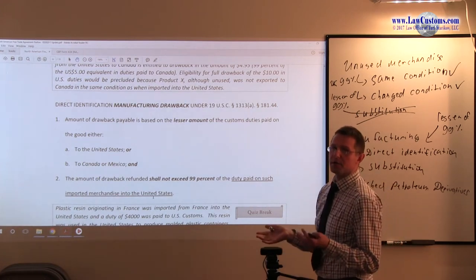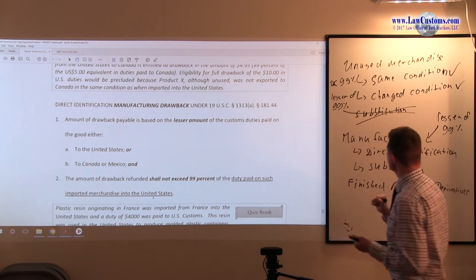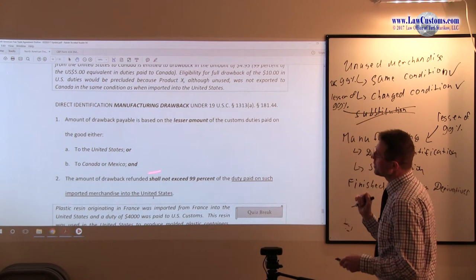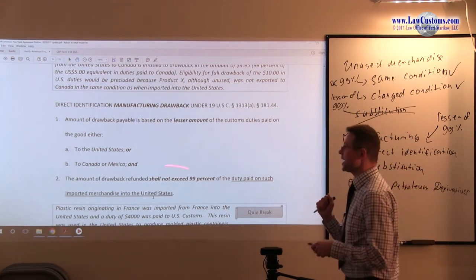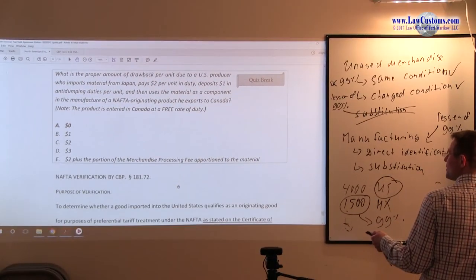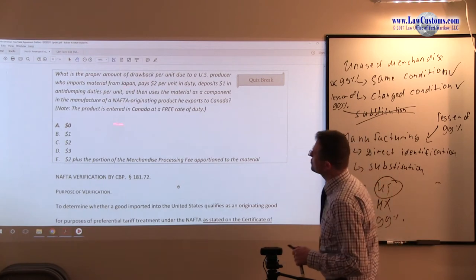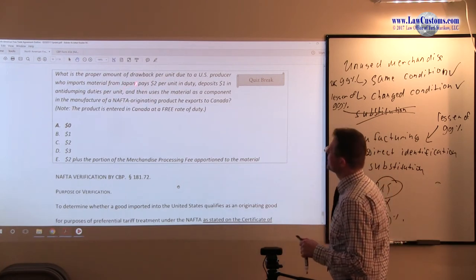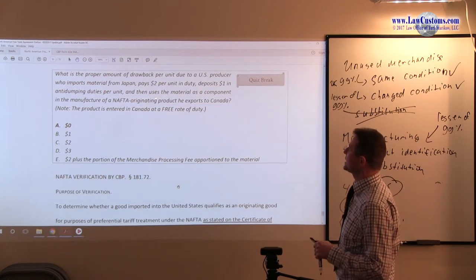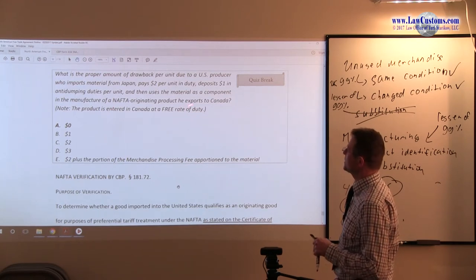So just like with this example over here, change and use merchandise condition, you look at the lesser amount you pay to Canada, Mexico, and you just take 99% of that. What is the proper amount of drawback per unit due to a US producer who imports materials from Japan, pays $2 per unit in duty, deposits $1 in anti-dumping duties, and then uses material as a component in the manufacture of a NAFTA originating product he exports to Canada?